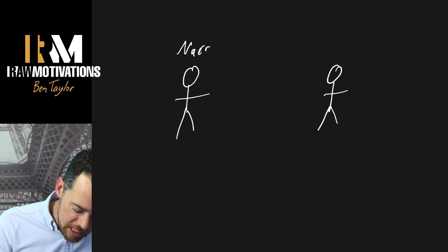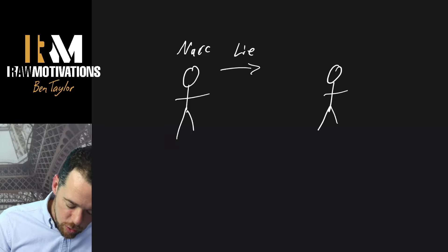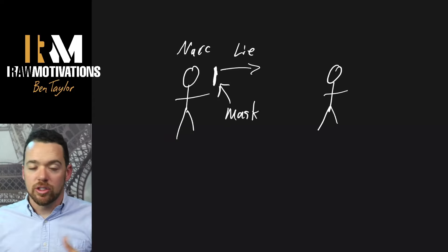So you have the narcissist, and he sold you a lie. He said, hey, this is who I am. This is how I look. Look at me. This is the mask of me. I'm looking, I'm appearing, I'm acting a certain way.